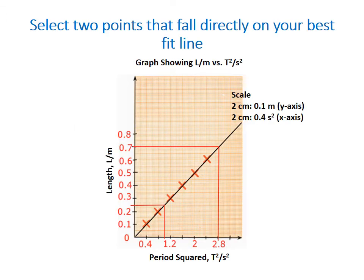So here we have our graph. It is length versus period squared. So we have length on our y-axis and period squared on our x-axis. Then we would have drawn our best fit line. And now we're going to look closely at our best fit line to select two points that fall exactly on this line.